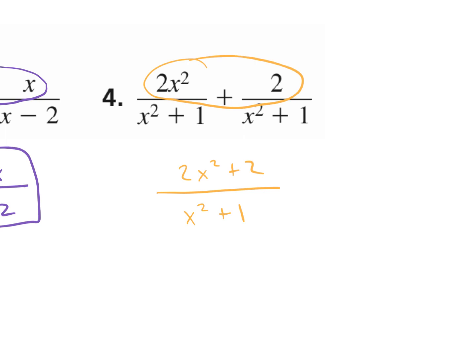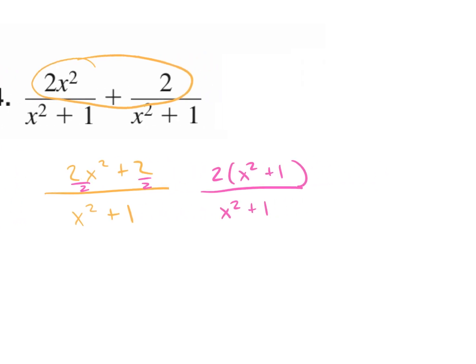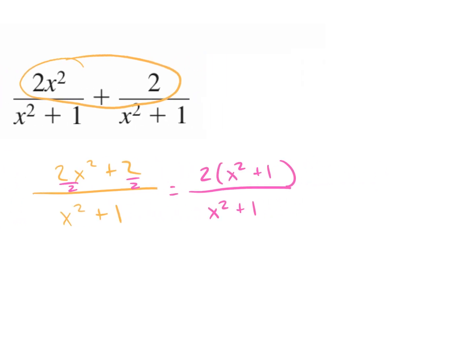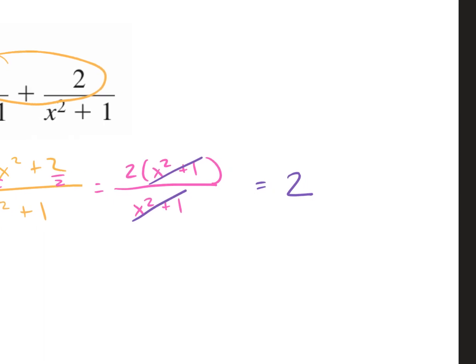I'm going to take out the GCF on top — I'll take out the 2. So I'm dividing both terms on top by 2, and I'm left with x squared plus 1 over x squared plus 1. Since these are the same, just like we did in section 7.3, they cancel, and we're left with 2.